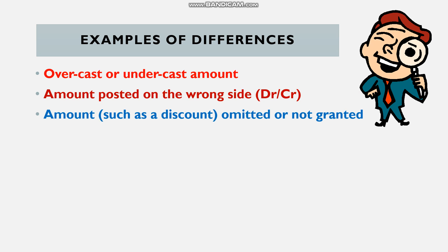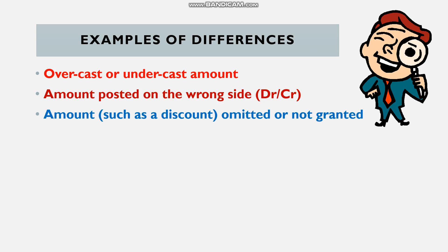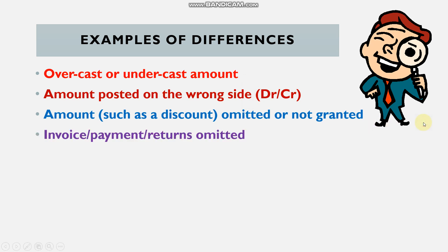Another difference: a discount is omitted or not granted. If we've negotiated a 10% discount for early payment and we record it, but the statement shows the discount was not granted — that's a difference. Conversely, the discount may appear on the statement but we forgot to record it. Read the supporting notes carefully to see exactly who made the mistake, then correct it in the right place.